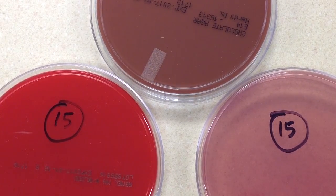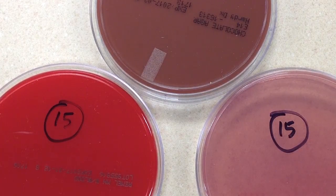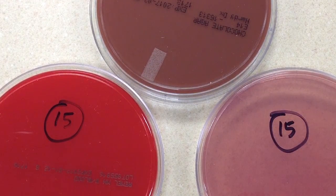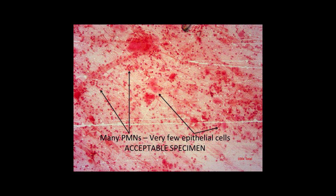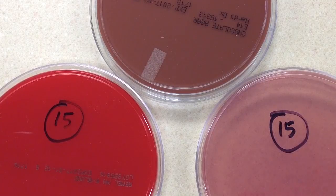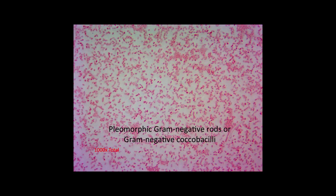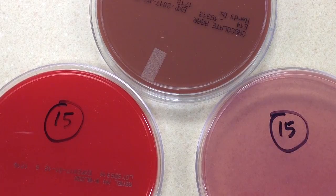Here is another sputum specimen. This time we have a 32-year-old male who is suffering from pneumonia. When we went ahead and did the gram stain or direct smear from the specimen, it was an acceptable specimen — meaning there were plenty of PMNs and very few epithelial cells. There were also exclusively pleomorphic gram-negative rods, and pleomorphic means of different shapes and sizes.